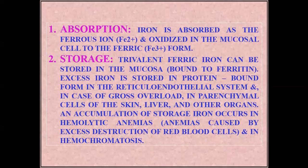Iron is absorbed as ferrous iron and oxidized in the mucosal cell to the ferric form. Trivalent ferric iron can be stored in the mucosa bound to ferritin. Excess iron is stored in protein-bound form in the reticuloendothelial system and, in cases of gross overload, in parenchymal cells of the skin, liver, and other organs. Accumulation of storage iron occurs in hemolytic anemia, where iron release is caused by excess destruction of red blood cells, and in hemochromatosis.